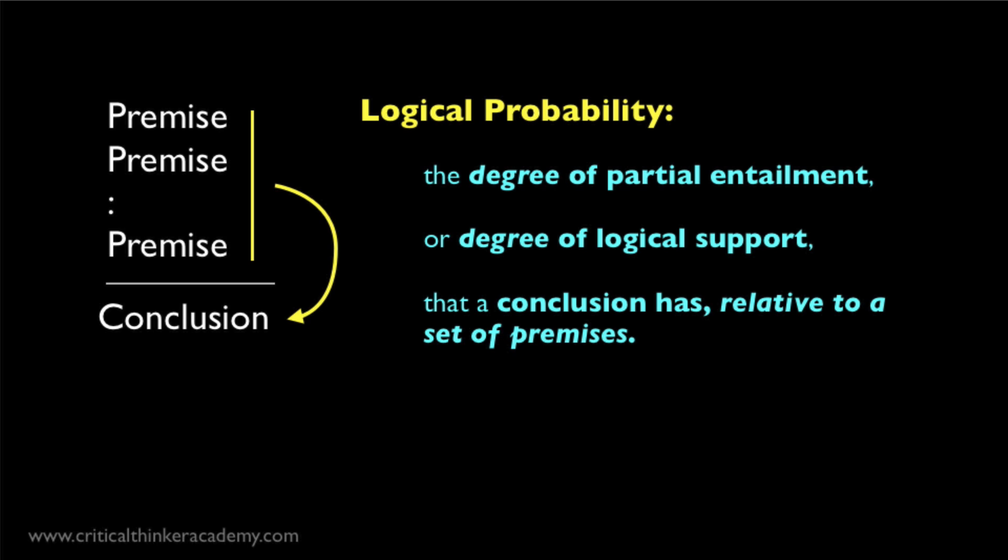The logical approach to probability defines probability in these terms. As a measure of the degree of partial entailment or degree of logical support that a conclusion has given certain premises. When you think of the probability of a statement as ranging in a value of between 0 and 1, then 1 represents classical logical entailment, where the premises guarantee the truth of that statement, and values less than 1 represent greater and lesser degrees of partial entailment.